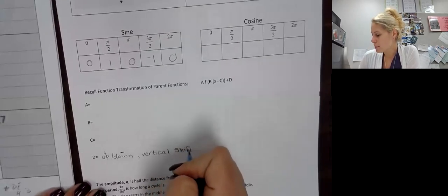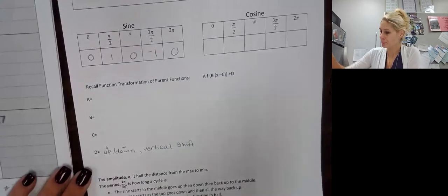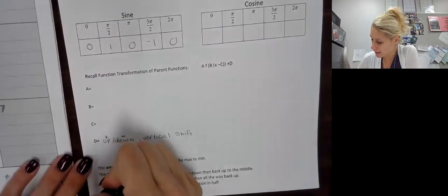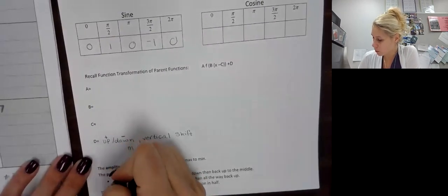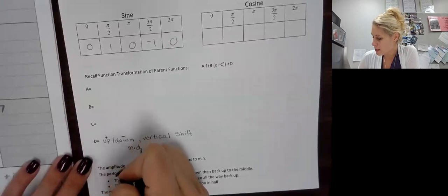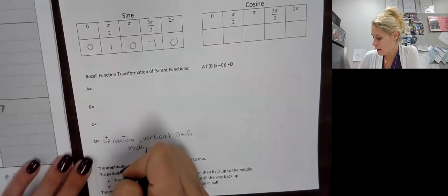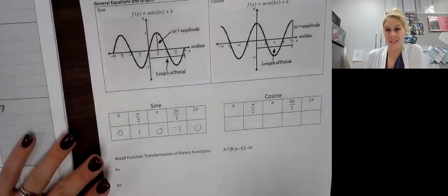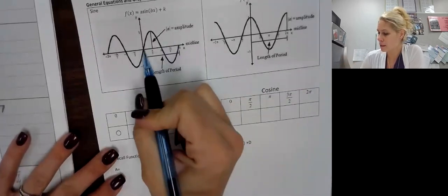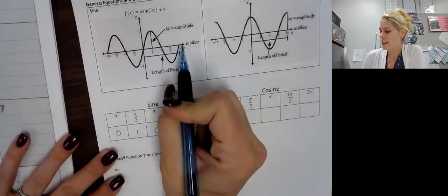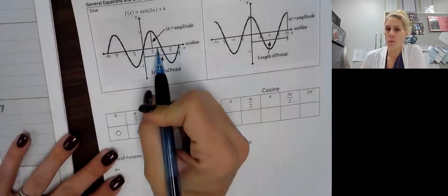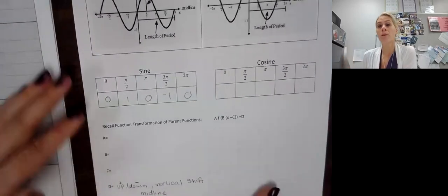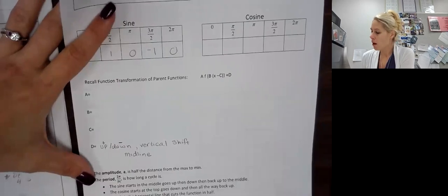This also indicates where the midline is going to be. The midline is, as you might think, the middle. So as you can see, I can cut this in half and there would be my midline. So that vertical shift really moves that midline and tells us where it's at.